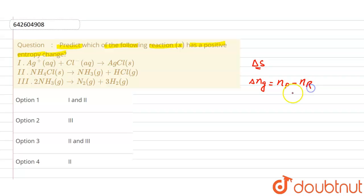And if delta ng is positive, what is the meaning of that? That means number of moles of product is greater, that means degree of randomness will increase. So that means delta s also will be positive. Secondly, delta ng is negative.